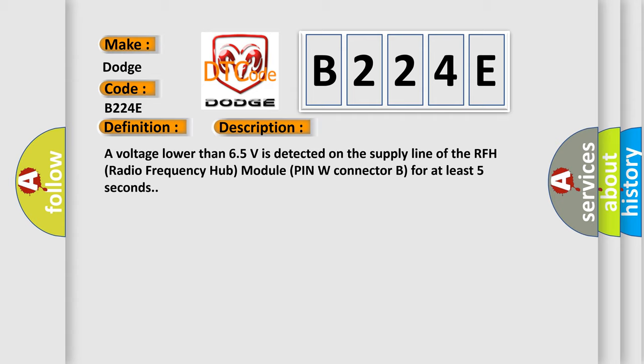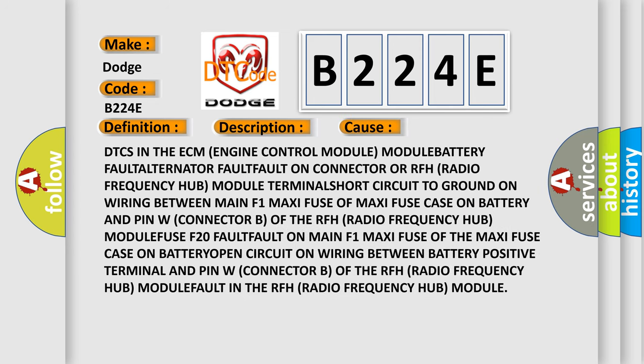This diagnostic error occurs most often in these cases: DTCs in the ECM engine control module, module battery fault, alternator fault, fault on the RFH radio frequency hub module terminal, short circuit to ground on wiring between main F1 maxi fuse of maxi fuse case on battery and pin W connector B of the RFH radio frequency hub module, fuse case on battery open circuit on wiring between battery positive terminal and pin W connector B of the RFH radio frequency hub module, or fault in the RFH radio frequency hub module.